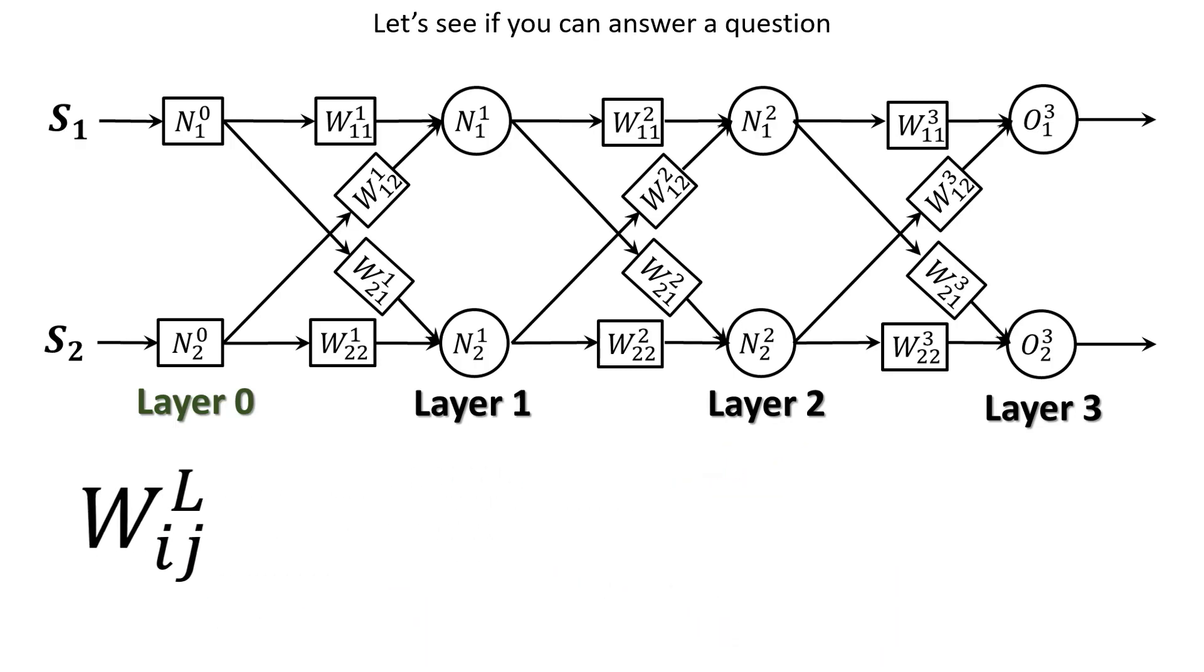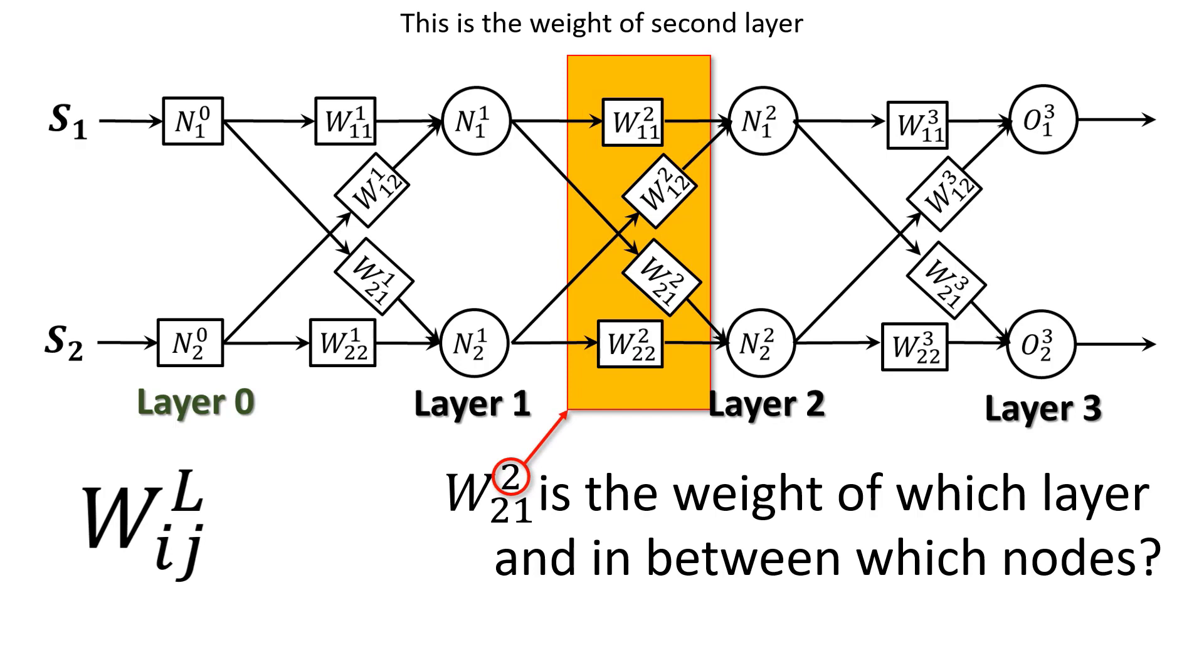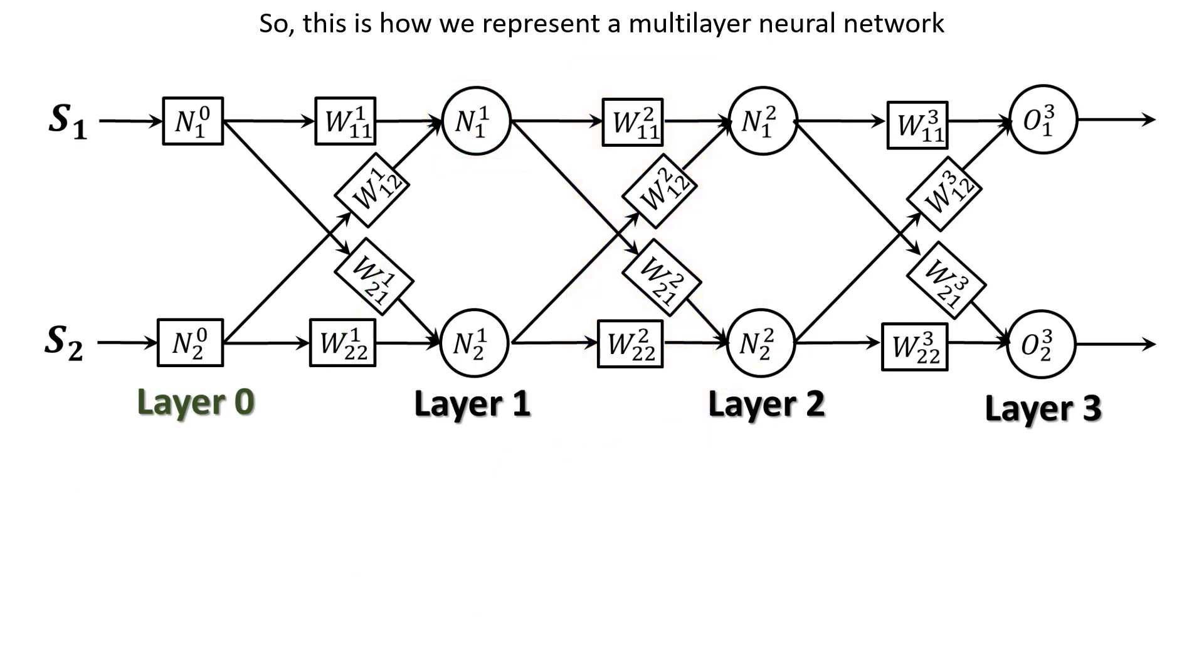Let's see if you can answer a question. W221 is the weight of which layer and in between which nodes? I have no doubt that you can answer this question. This is the weight of second layer which is in between N2 and N1.